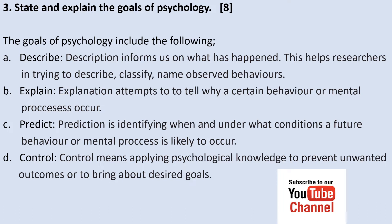Explanation: explanations attempt to tell why a certain behaviour or mental process occurs. The third goal is prediction, which aims to identify when and under what conditions a future behaviour or mental process is likely to occur. The fourth is control — applying psychological knowledge to prevent unwanted outcomes or to bring about desired goals. Some current textbooks include a fifth goal: to improve human conditions or human livelihoods.